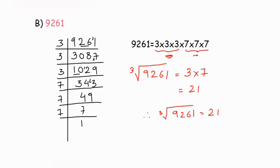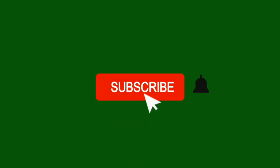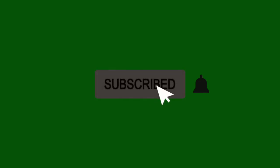It's very simple: do the prime factorization, form groups of three numbers, and from each group take one number — that gives you the cube root. I hope you understood how to find the cube root using the prime factorization method. Thank you so much for watching — please subscribe to my channel and click the bell icon!